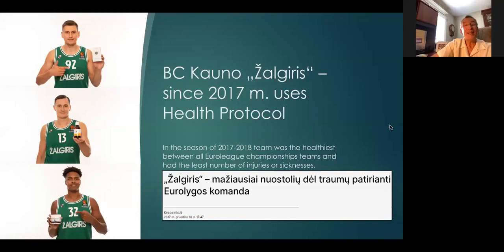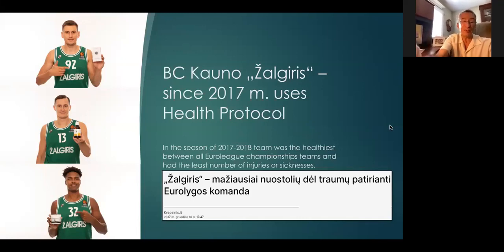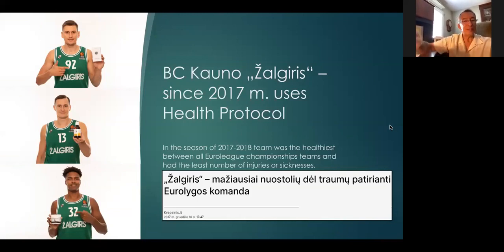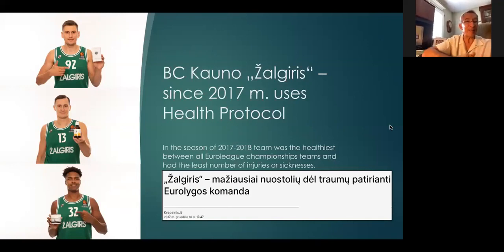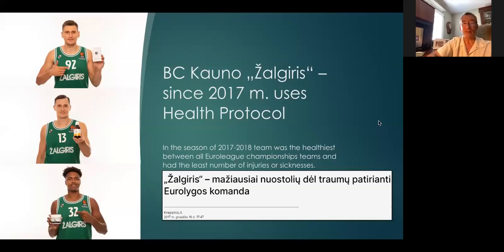Zalgiris basketball team has been using this program, and what's interesting about them is they have fantastic stamina — a track record of winning all their games in the last quarter. Other teams can keep up with them to begin with, but because Zalgiris has such fantastically good stamina through their radically better nutritional profiles, they are able to continue into the fourth quarter maintaining the same level of accuracy, speed, and physical intensity as throughout the rest of the game. That's when all the other teams are starting to fall back — that's when Zalgiris wins.